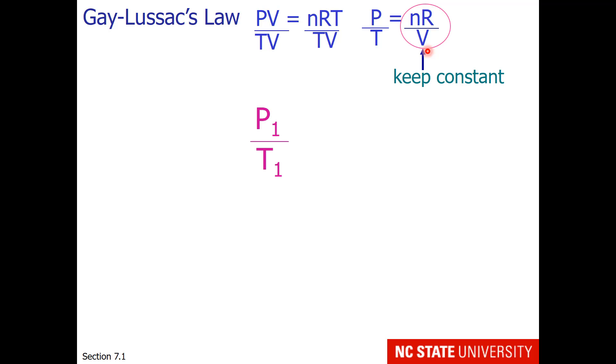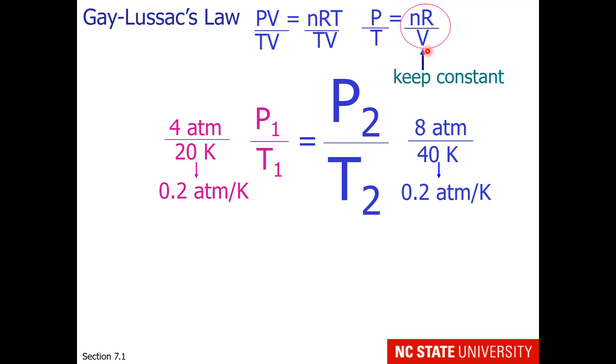So pressure divided by temperature under condition 1 might be something like 4 atm divided by 20 Kelvin. So that would be 0.2 atm per Kelvin. If I increase the temperature to 40 degrees, then the pressure must also increase to 8 atm in order to keep the same ratio. This is again directly proportional.